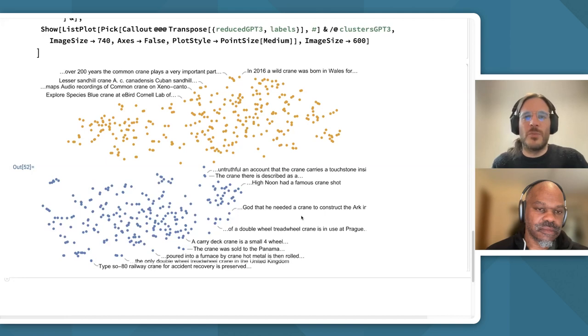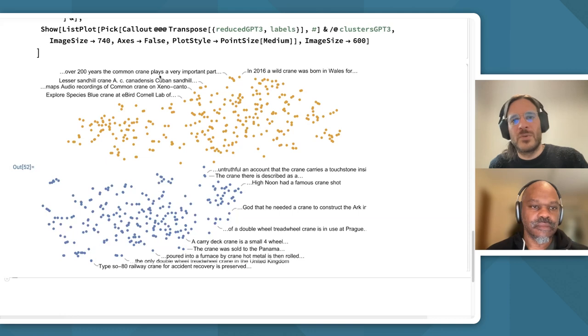If you see, this is doing quite a good job in separating sentences. Like 'carry that crane is a small four-wheel' or 'furnace by crane hot metal,' this stuff is definitely about crane the machine, while 'species blue crane' or 'audio recordings of common crane,' 'common crane plays a part,' 'a wild crane was boring ways,' all this stuff is about the crane the animal.